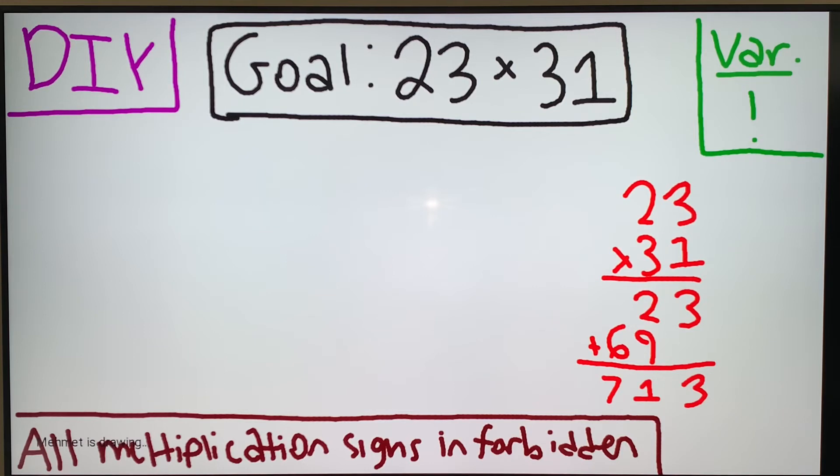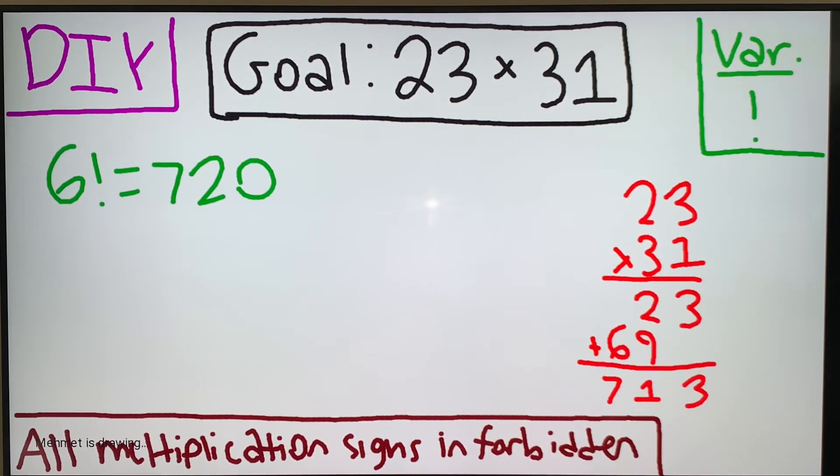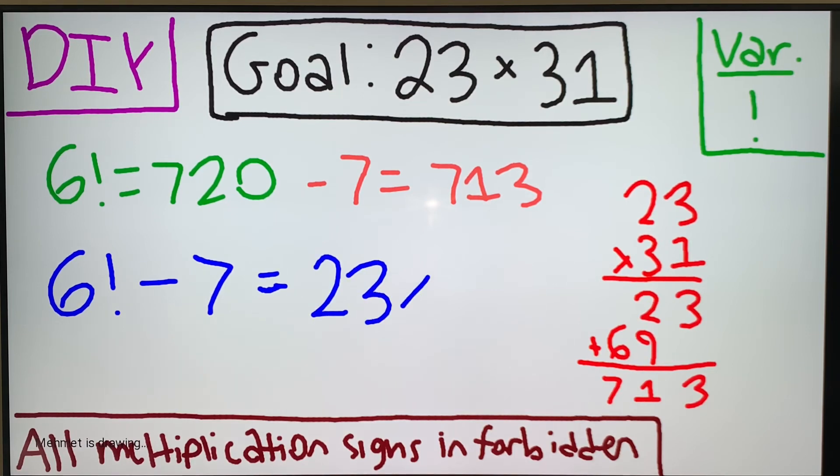So using your knowledge of factorial, you know that 6 factorial is 720. Well, 713 is the value. We're pretty close, but if we were to subtract another 7, we'd get to 713. Alright, so then let's say that the solution is 6 factorial minus 7. That works out, right? 720 minus 7 is 713, and that's the value of our goal. So this is the solution to our goal.